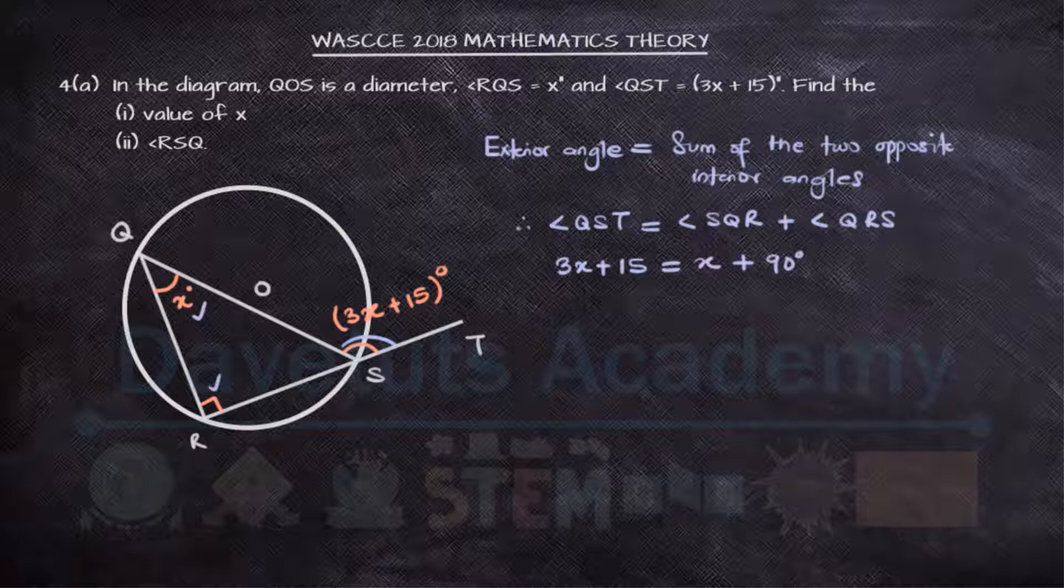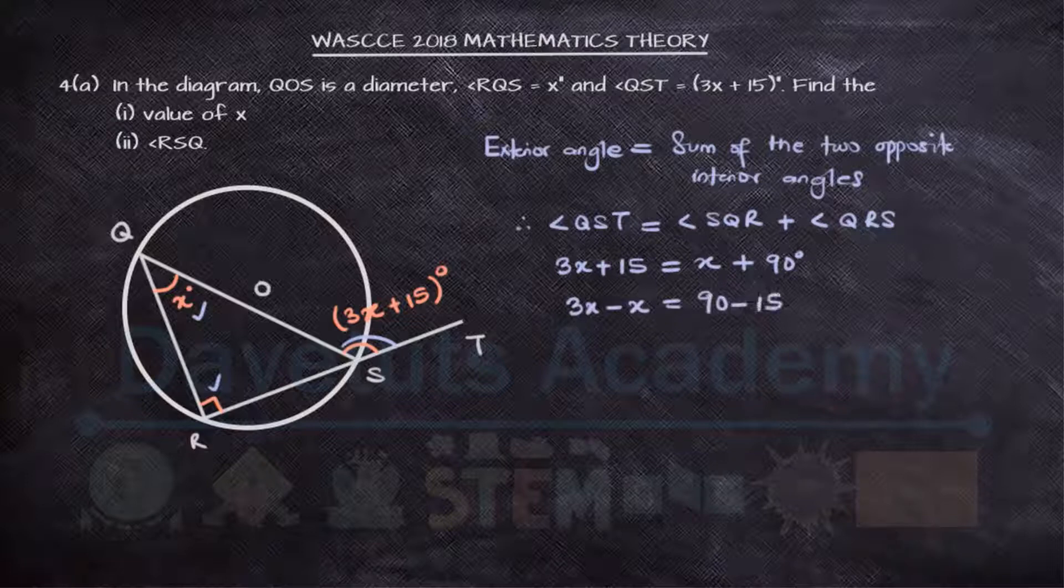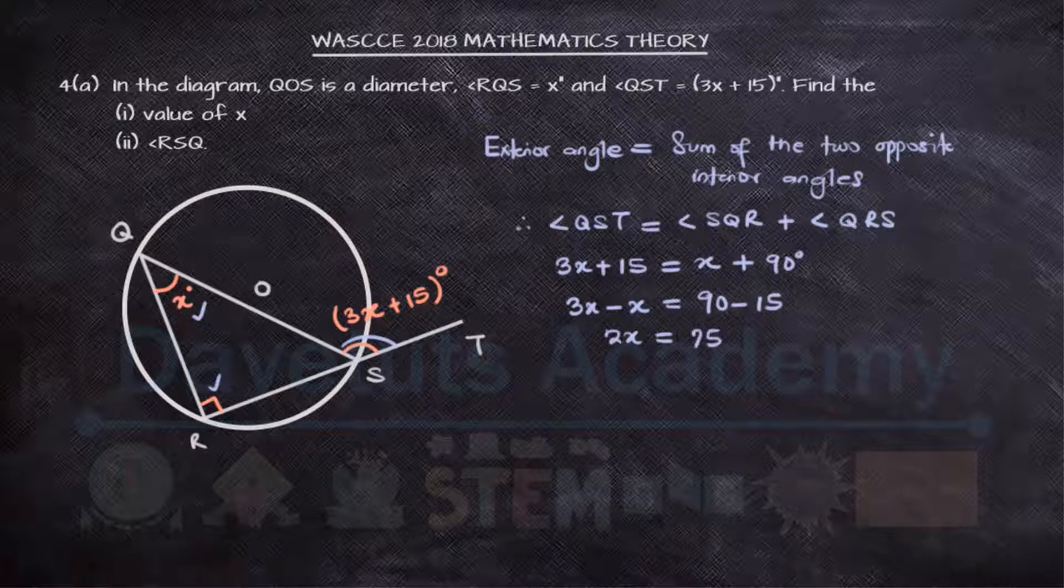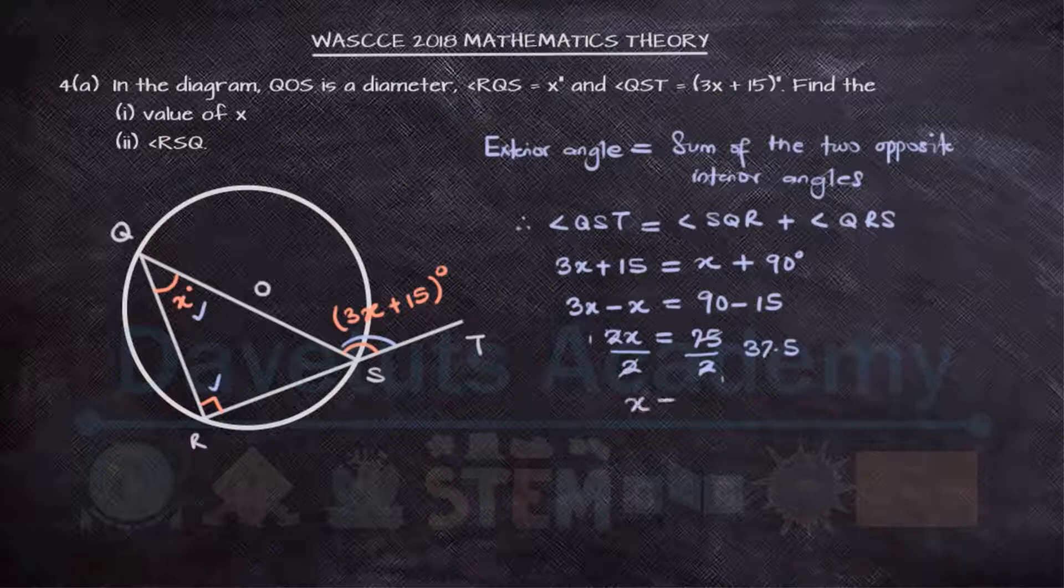And if we collect like terms, that would be 3x minus X equals 90 minus 15, so that 2x is 75. If we divide by 2, our X is 37.5 degrees. That means our X is 37.5 degrees.